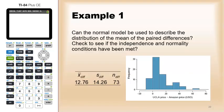Alright, so can the normal model be used to describe the distribution and the mean of the pair differences? Let's check the conditions.